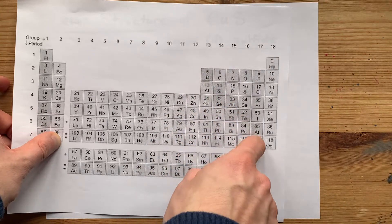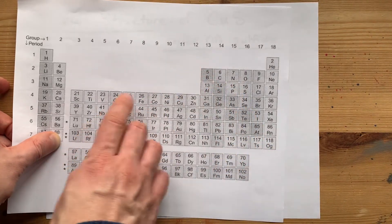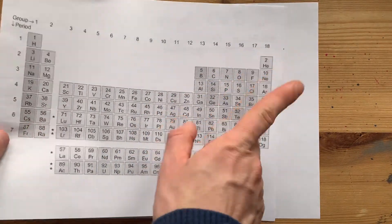Now this staircase of semi-metals separates metals—copper is one—from non-metals, sulfur is one.